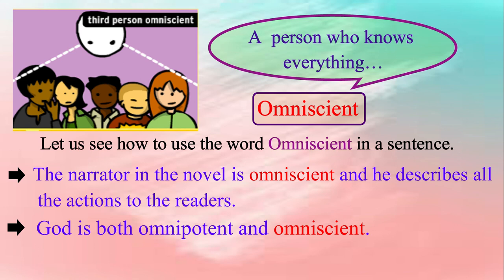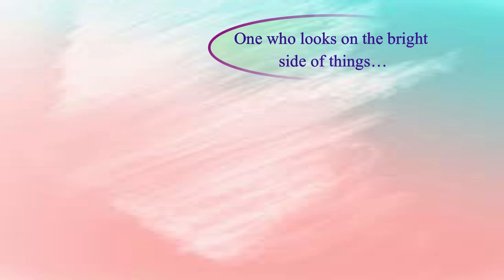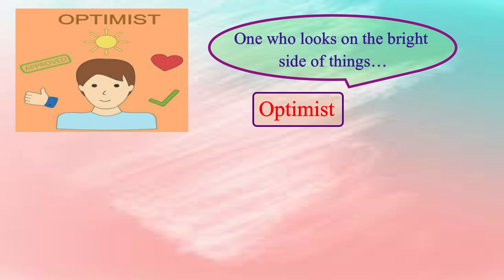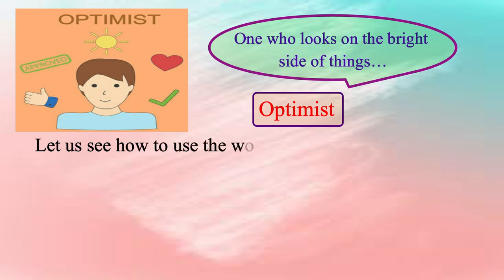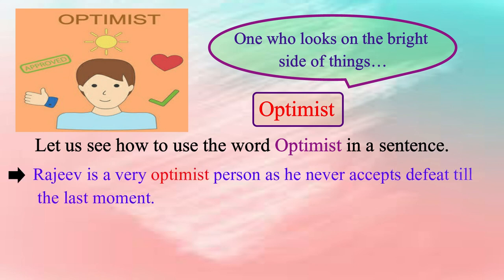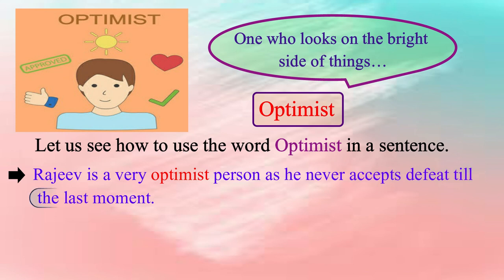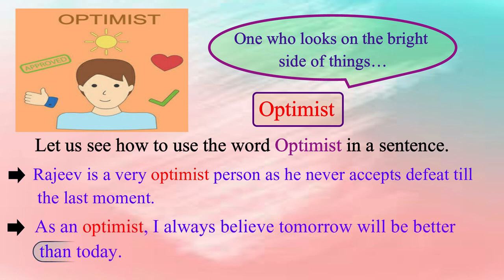Let us see the next expression. One who looks on the bright side of things, or we can simply say optimist. It describes the state of mind of someone who always believes that good things will happen. Let us see how to use the word optimist in a sentence. Please repeat after me: Rajiv is a very optimistic person as he never accepts defeat till the last moment. As an optimist, I always believe tomorrow will be better than today.